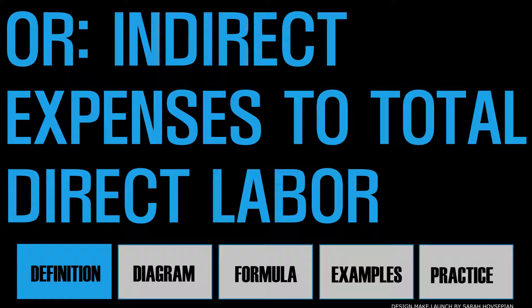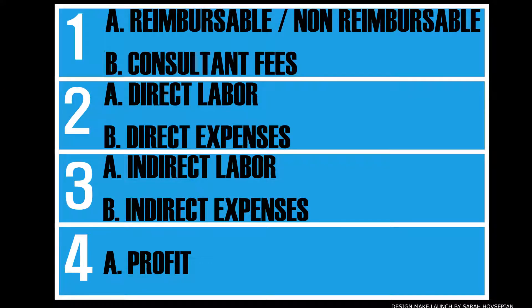Now let's dissect the definition of overhead and visualize it for you visual learners out there. With something to write with, redraw the following diagram. If you understand this diagram, then all seven financial indicators will be easy. This stacked diagram is basically a profit and loss statement divided into various sections. Section 1 includes all reimbursable and non-reimbursable expenses along with consultant fees. Section 2 is the direct category — direct labor and direct expenses. Section 3 is the indirect category — indirect labor and indirect expenses. Section 4 is profit. I've drawn this so many times that it's now very easy for me to remember, and I recommend you do the same.